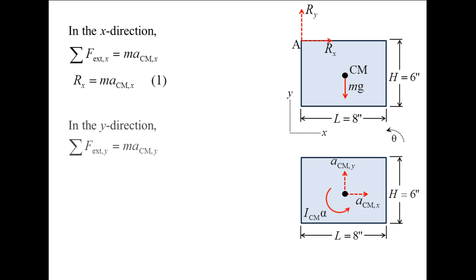For the y-direction, Ry is pointed in the positive y-direction, and the weight is pointed in the negative y-direction. This is equation number 2.